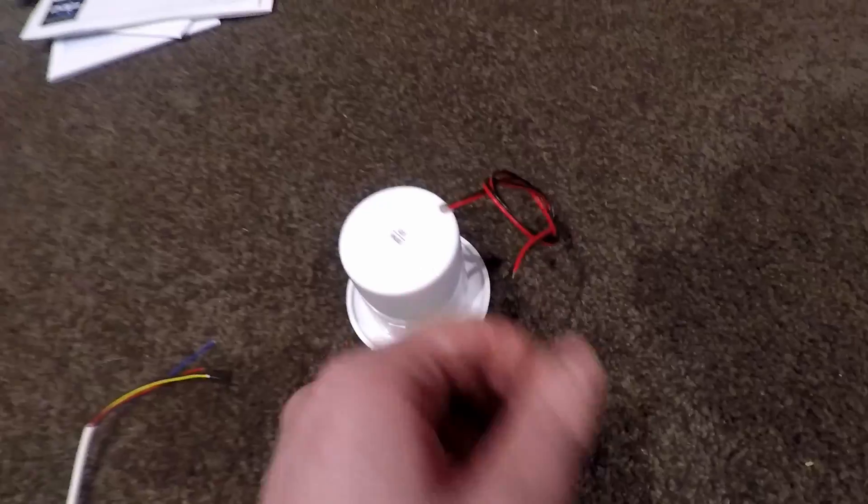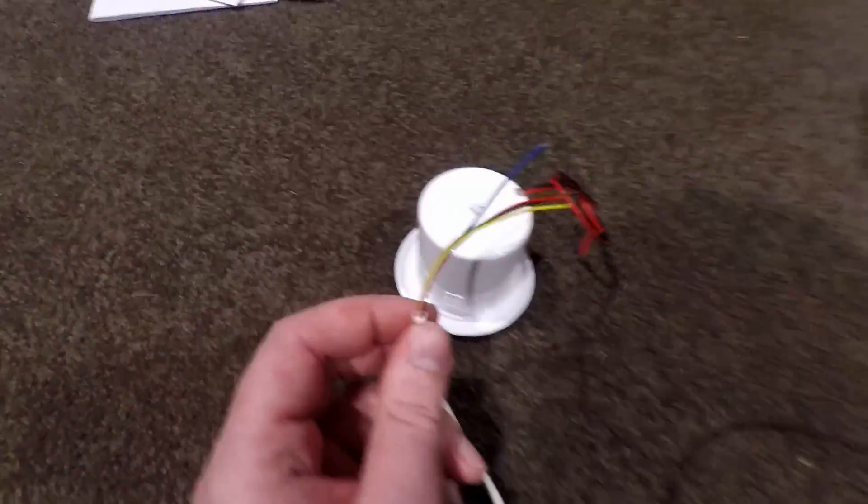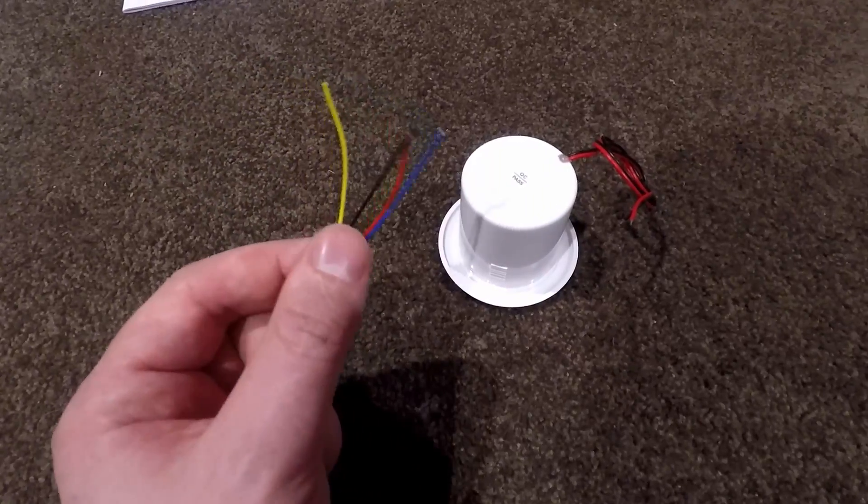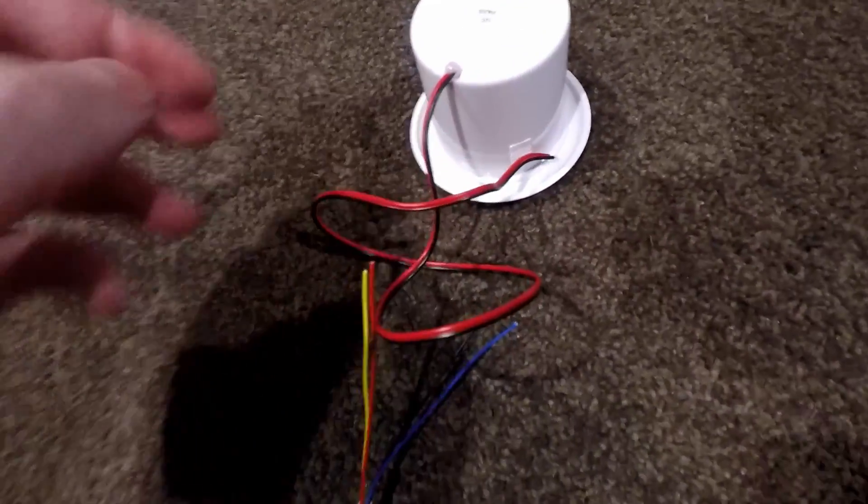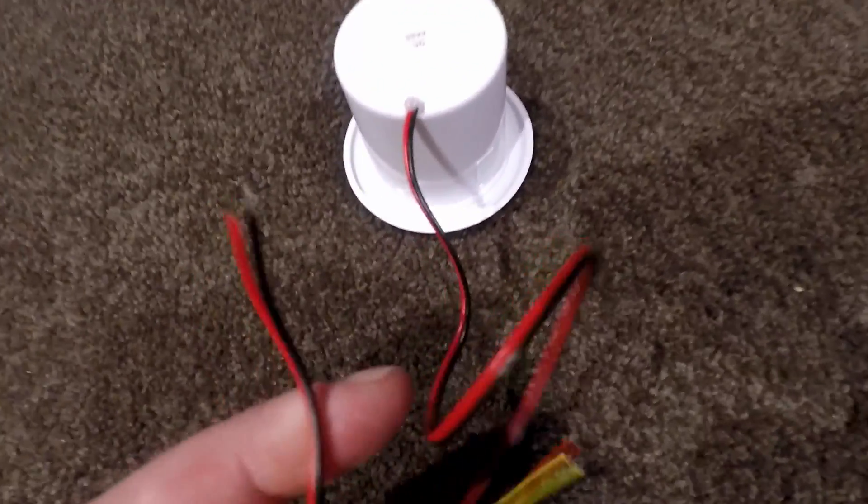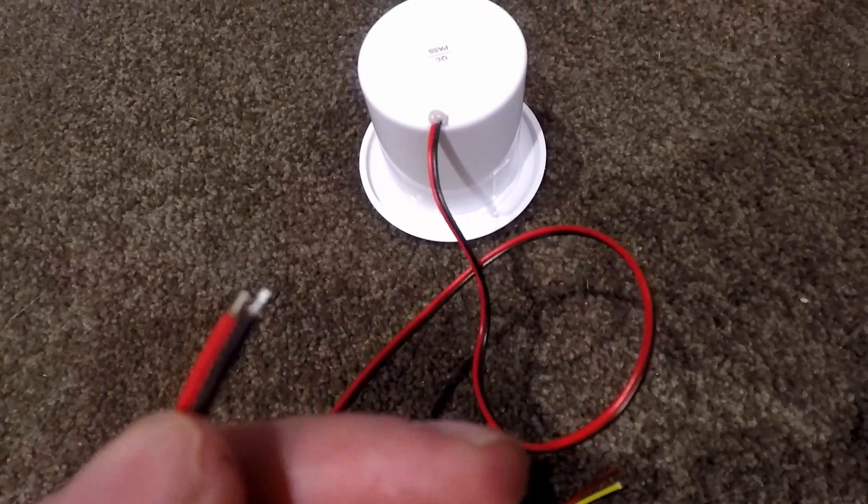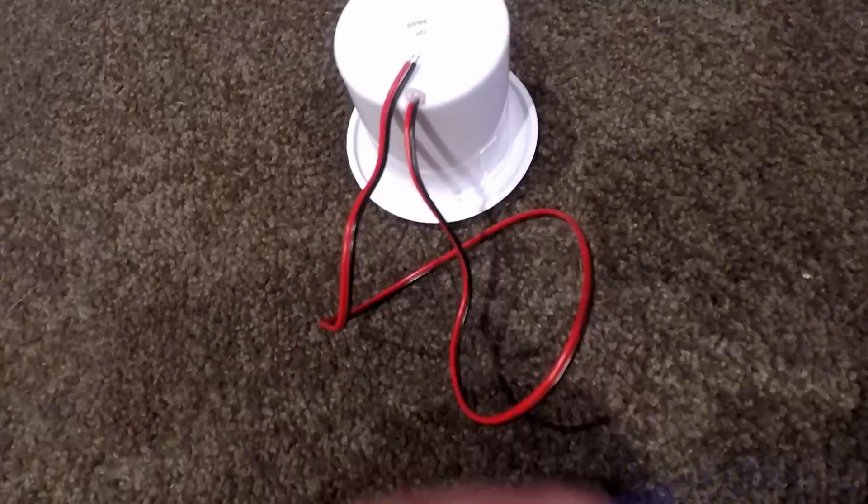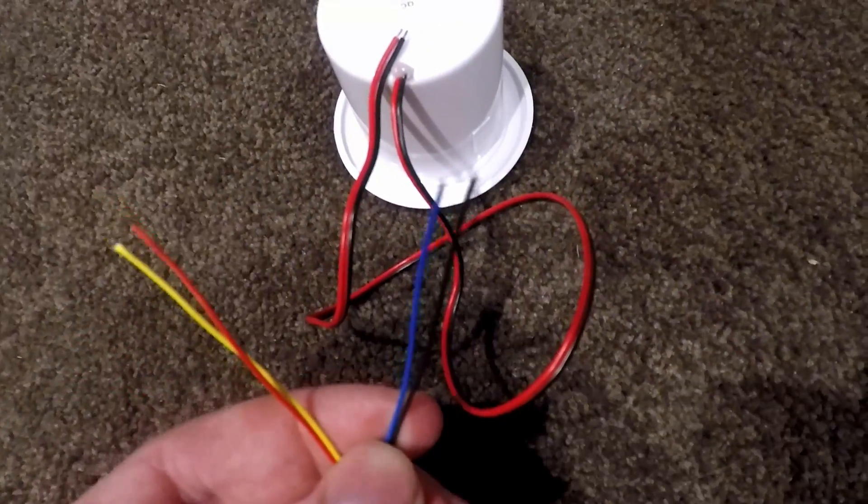Yeah, so that sits in the ceiling and then obviously we've got our cable here that goes back to the alarm unit and what we're going to do is wire these together. Now you will see that these two cables coming off the back of the siren here are a thicker gauge than the 0.2mm alarm cable.